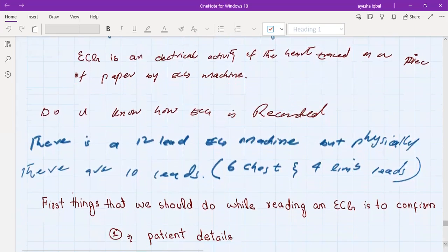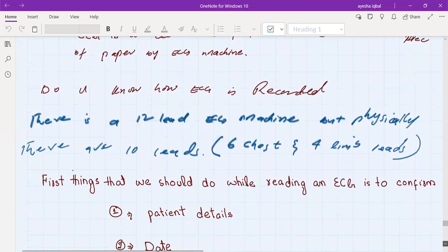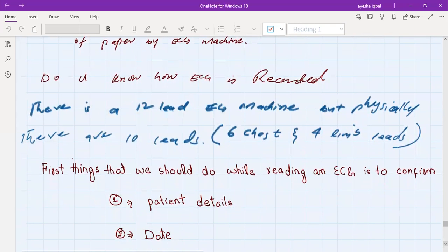Basically there is a 12-lead ECG machine and physically there are 10 leads. Six leads are placed on the patient's chest and four leads are connected to the patient's limbs and then the ECG is recorded.